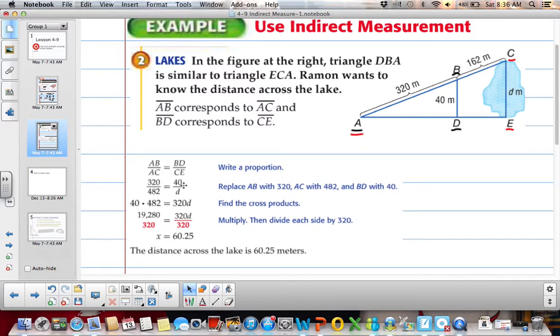So the most important part is setting up your proportion correctly. And then from there, then you'll find the cross products, multiply, divide, and then you'll get your answer, which is 60.25 meters.